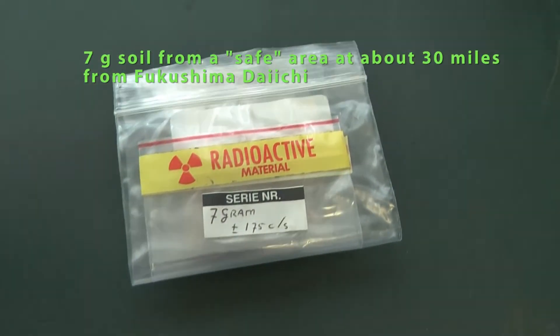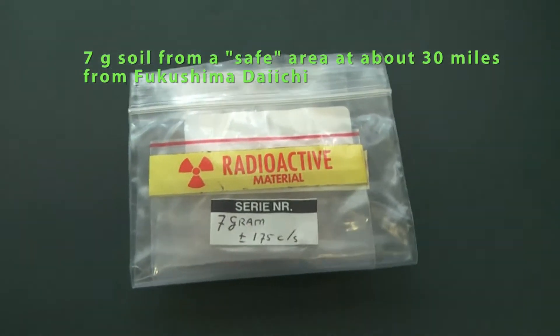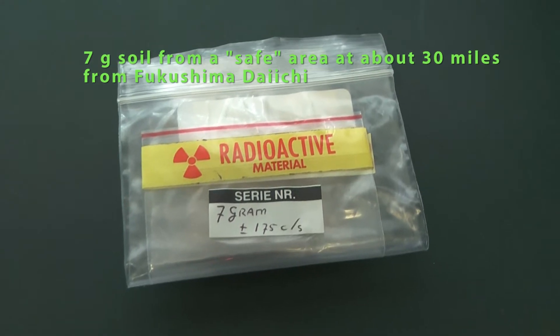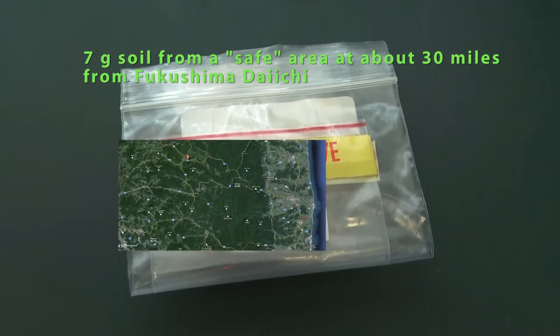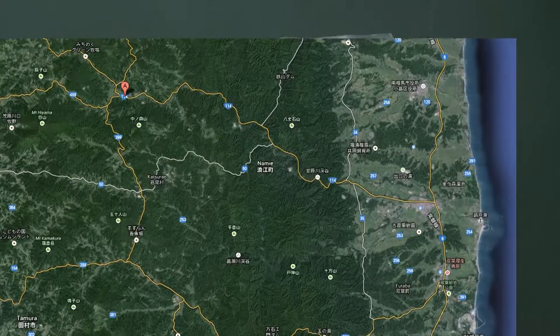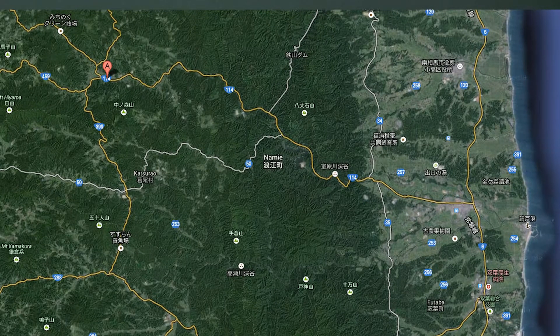This is some soil from Japan from an area at the distance of about 30 miles from the Fukushima power plant.